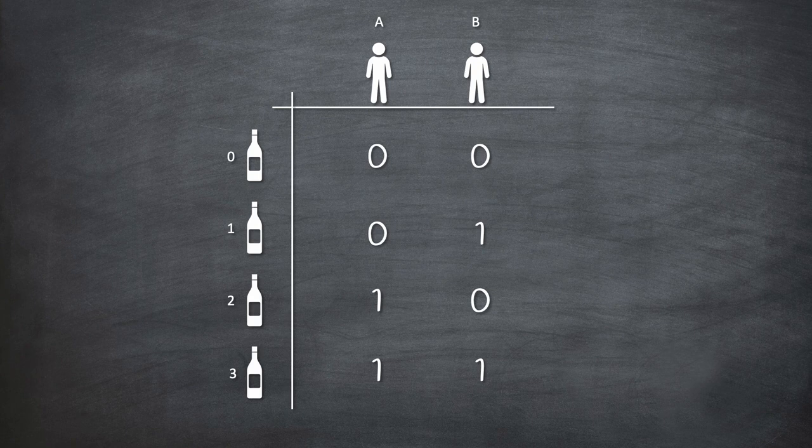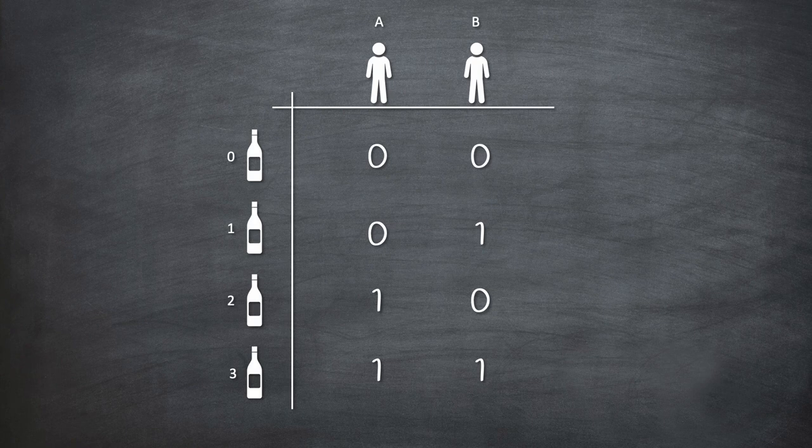So in this example, prisoner A drinks from bottle number 2 and 3, and prisoner B drinks from bottle number 1 and 3. This is represented by 0s and 1s.